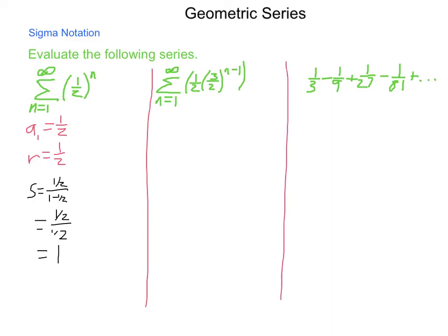Next, we have the sigma of 1 to infinity of 1 half times 3 halves to the n minus 1. Our first value, if we put in 1, 1 minus 1 is 0, 3 halves to the 0 is 1, we're left with our first value being 1 half. Our r value is 3 halves. Because 3 halves is greater than 1, the sum does not exist. When you're dealing with the summing of infinite geometric series, this has possibility. The absolute value of r has to be between 0 and 1.